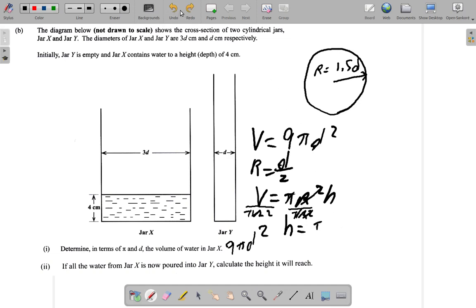The height of water is V over πr². That applies to any cylinder. Let me draw a line here to separate the work. Now, this is the height for any cylinder.